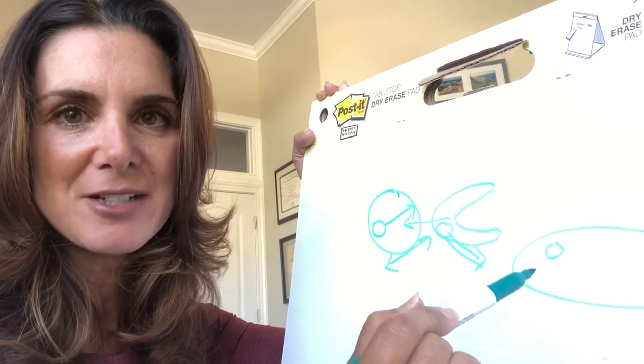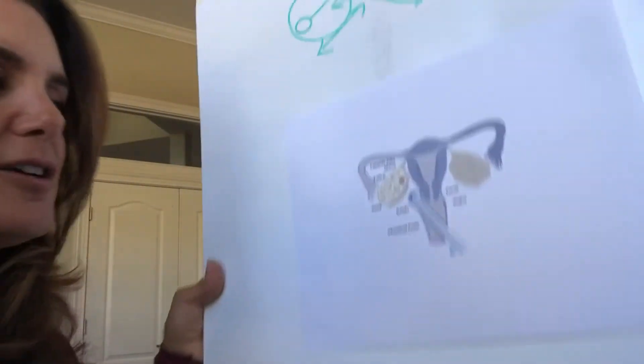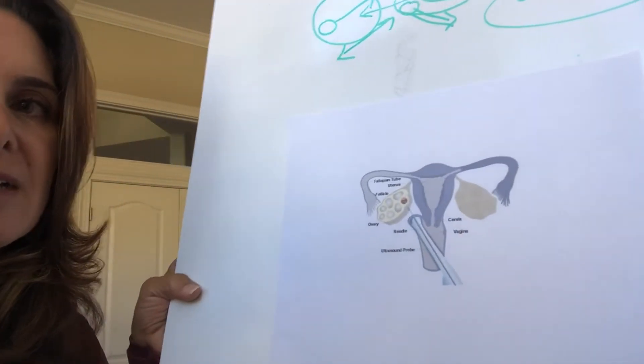So what we're doing is we are puncturing follicles in order to obtain the egg that's inside of them to put them into the petri dish to be fertilized by sperm. How do we do that? I have to show you a picture of this because there's no way I'm being able to draw this for you guys.